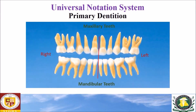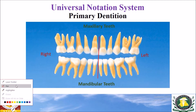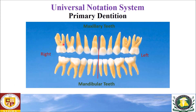Now we will do some exercises of the universal notation system for the primary or deciduous dentition. This is a complete picture of a deciduous or primary dentition. There are 10 teeth in the upper arch and 10 teeth in the lower arch. The red line indicates the midline — this is the right side and this is the left side.